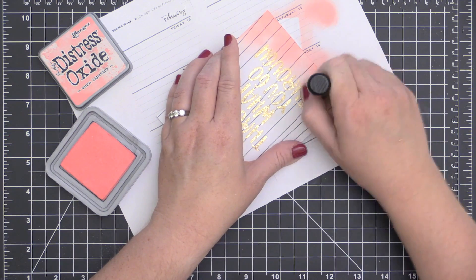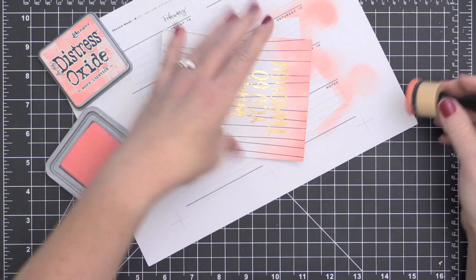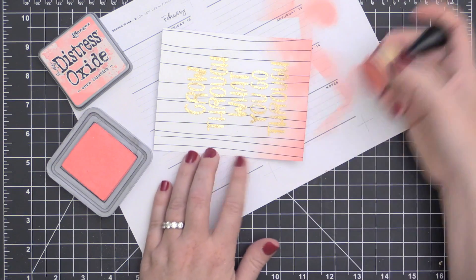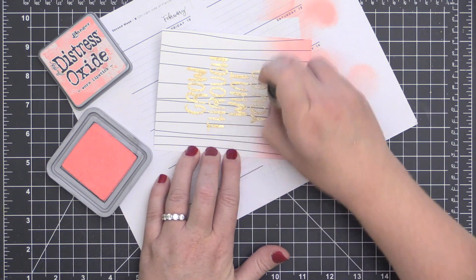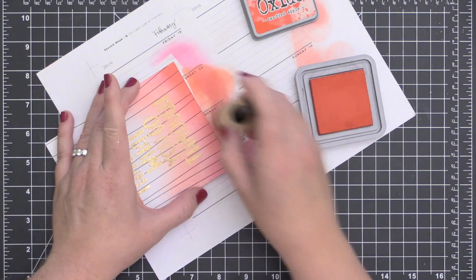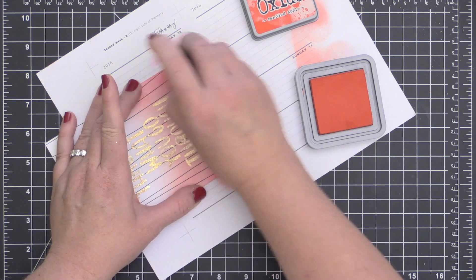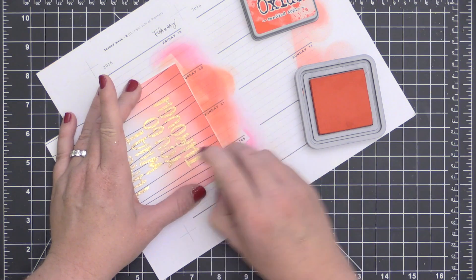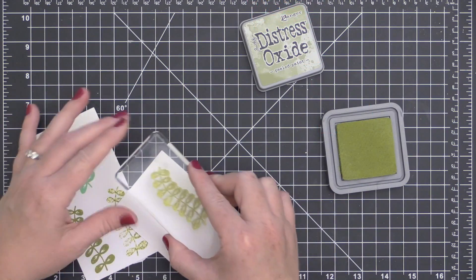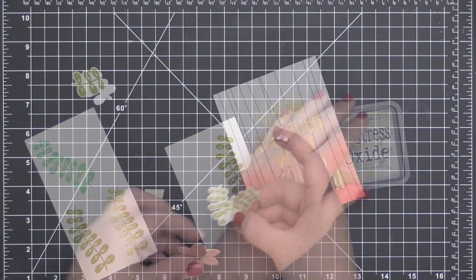I went ahead and wiped away the excess with my brush once again, and I am blending on some more of that Worn Lipstick up from the bottom. These Distress Oxide inks blend really nicely on just your standard cardstock, so I really like using them. Then I'm going to intensify the color along the bottom by adding a little bit of Abandoned Coral and I think I even brought in some Candied Apple as well.